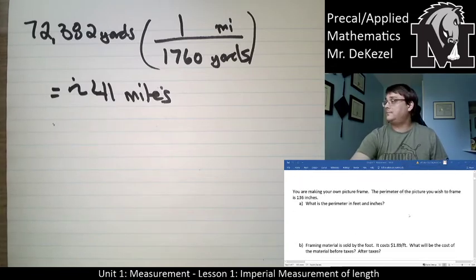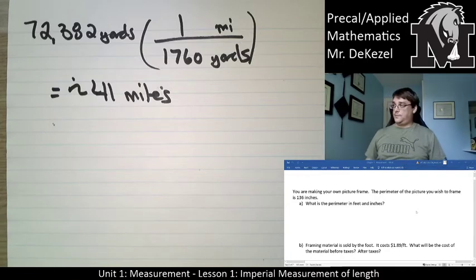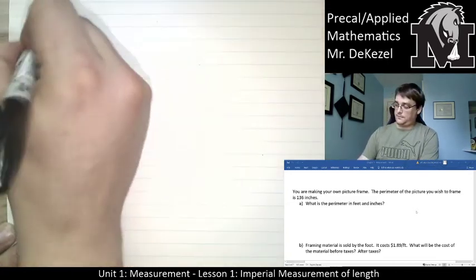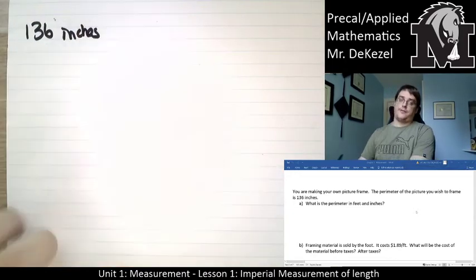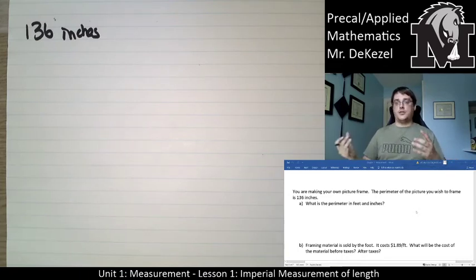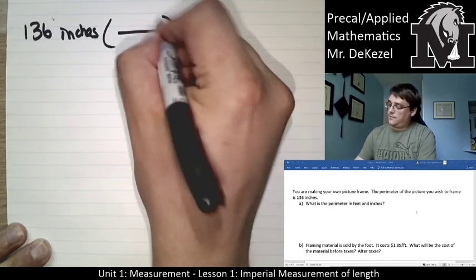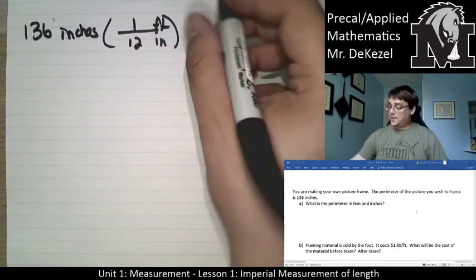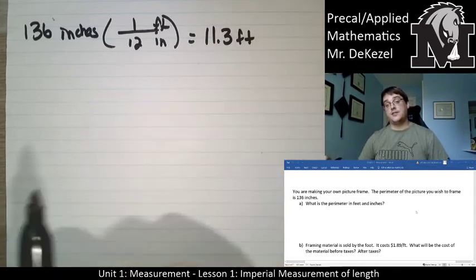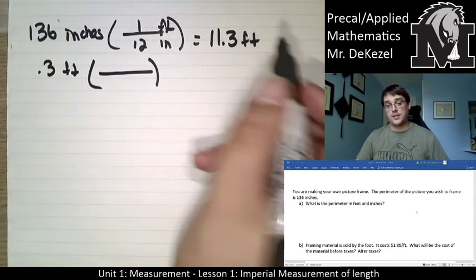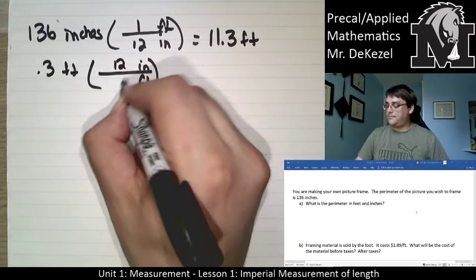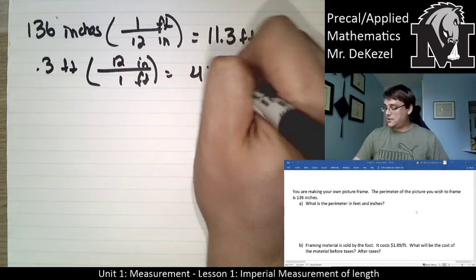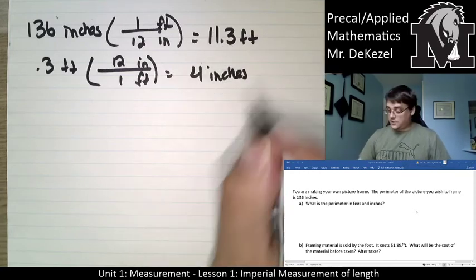Moving on to the next example: you're making your own picture frame. The perimeter you wish to frame is 136 inches. What is the perimeter in feet and inches? So we have 136 inches, and we're going to feet and inches — meaning we convert to feet first. Feet goes on the top, inches on the bottom — there are 12 inches in a single foot. Dividing gives us 11.3 feet. The 11 is good, but we need to take the 0.3 feet and find out how many inches that is — so we convert backwards: feet goes on the bottom, inches on the top, 12 on the top, 1 on the bottom. 0.3 times 12 is 4 inches.